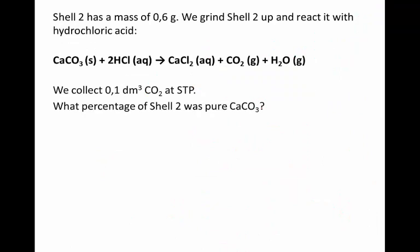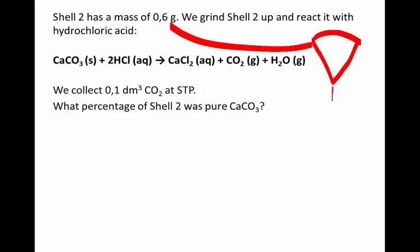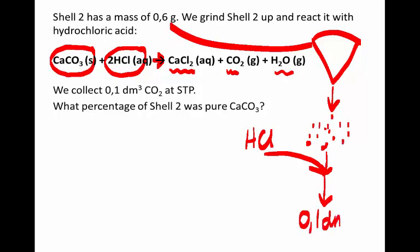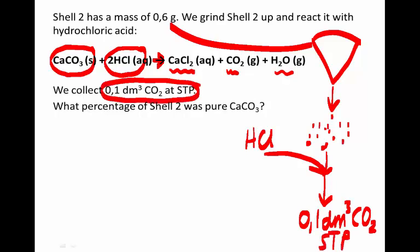Let's now answer a more challenging question. Shell 2 has a mass of 0.6 grams. We grind it up into powder so that we can react it with some hydrochloric acid. The calcium carbonate inside the ground-up shell reacts with the hydrochloric acid to form calcium chloride, carbon dioxide, and water. From this reaction, we collect 0.1 decimetres cubed of carbon dioxide at STP. We are asked: what is the percent purity of shell 2?